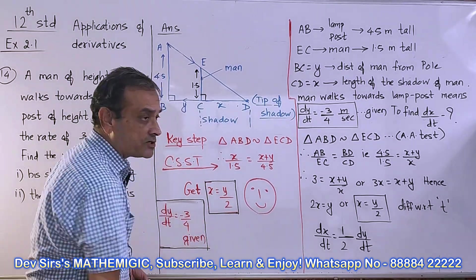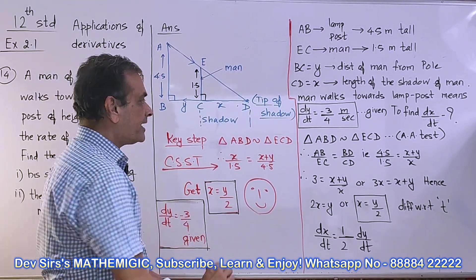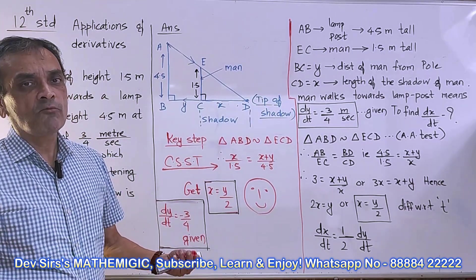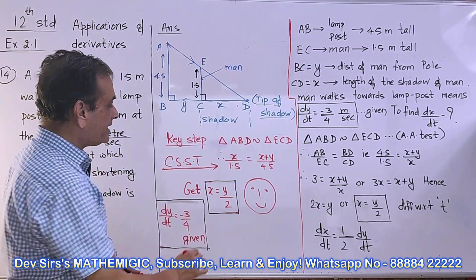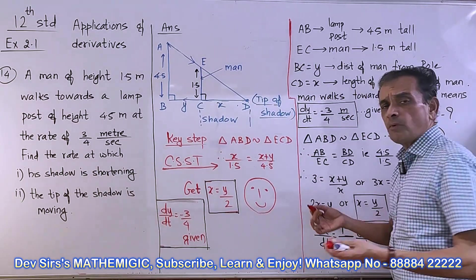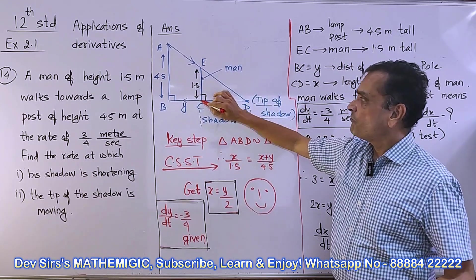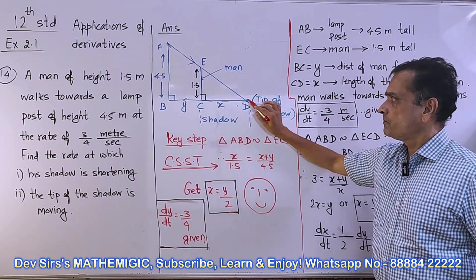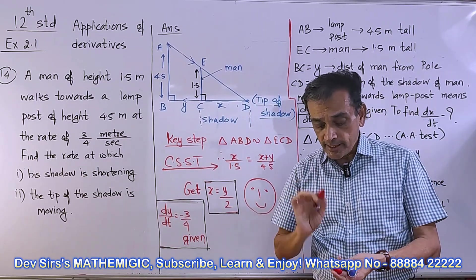This equation we're going to get after showing triangles similar. After getting this equation, differentiate with respect to T to get dx/dt and dy/dt. We have to form an equation with the help of the diagram. AB is the lamppost 4.5 meters, EC is the man 1.5 meters, BC equals Y, CD equals X. CD represents the length of the shadow.